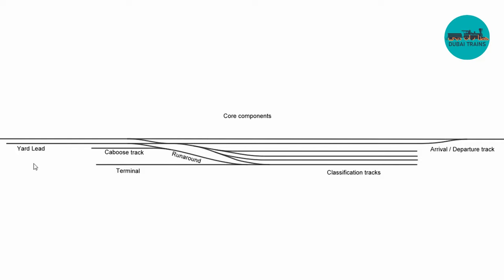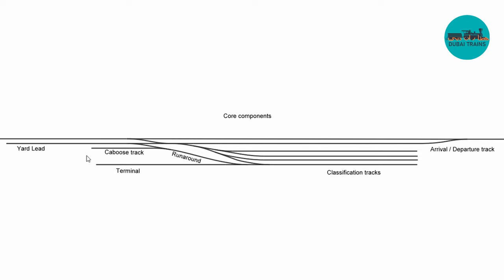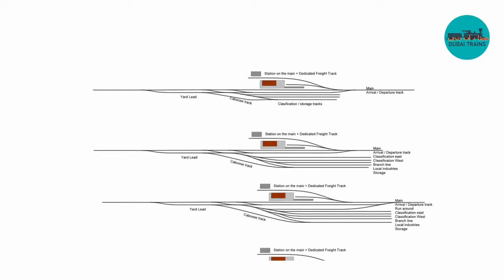Before we lose the plot, let's go through the core components you really want regardless of yard size. First, a yard lead — a very important piece. Then classification tracks, because that's why we have a yard in the first place. A dedicated arrival and departure track is very useful, especially on a busy main line. You'll want an extra runaround — a common location is here, or a separate track. Don't forget a caboose track or RIP track, and a place to terminate your engines — a terminal, which can be a simple track or a full yard.